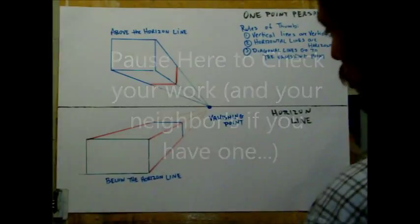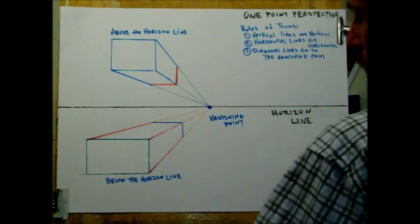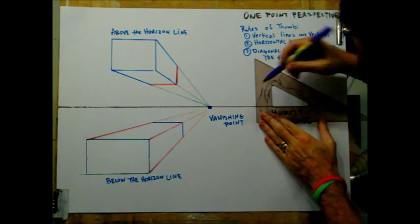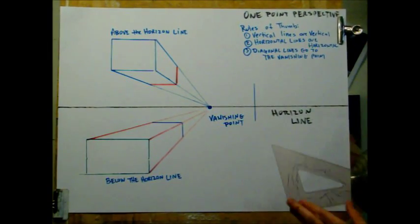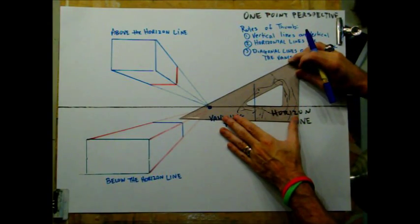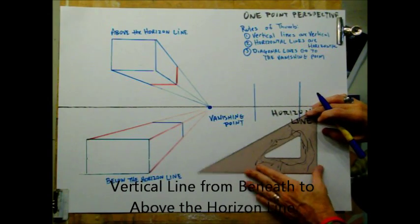The last cube I'm going to show you is going to be on the horizon line. So I will draw a vertical line that goes from beneath to above my horizon line. I will draw another one that goes from beneath to above my horizon line.